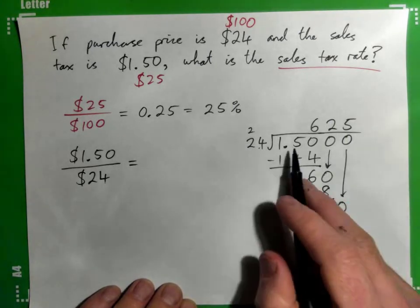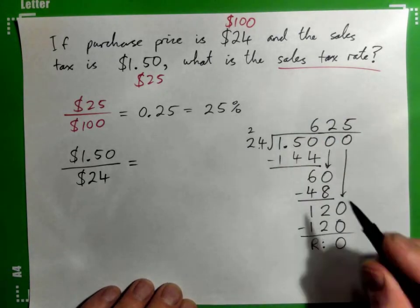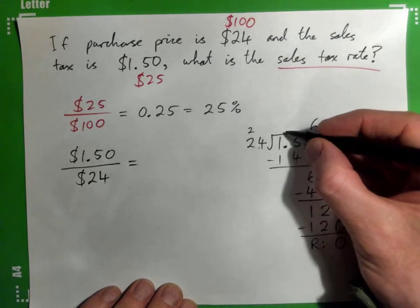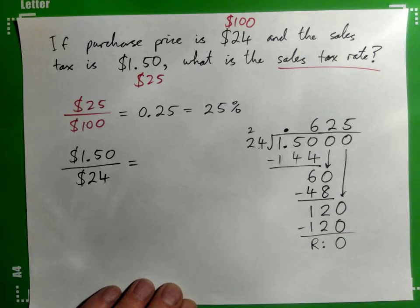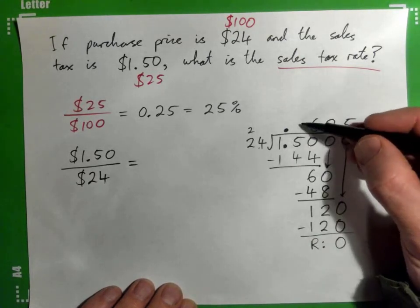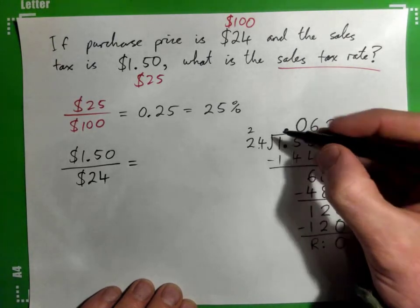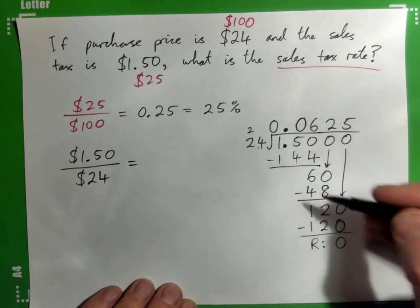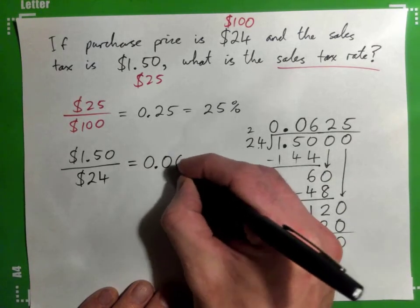Now, problem though, where's our decimal point supposed to be in all this up here? Right there. Yep. And so we need a 0 in front of 5 there. And then 0, might as well stick a 0 here as well. So 0.0625.